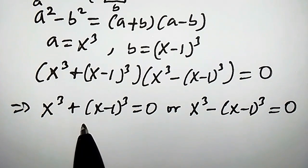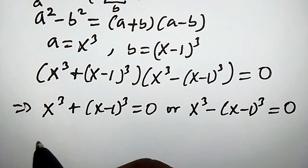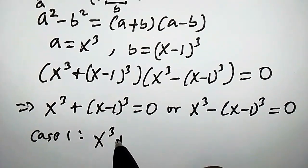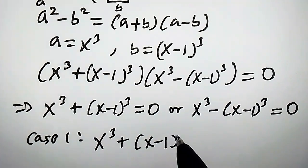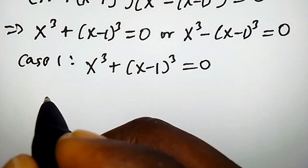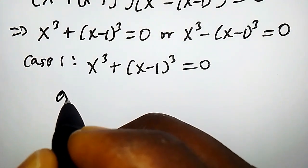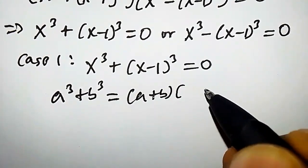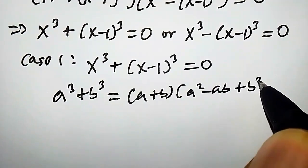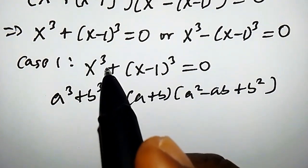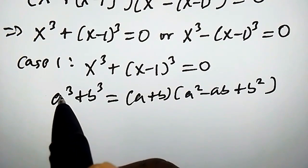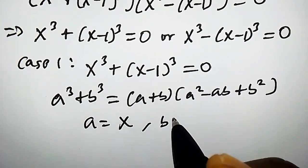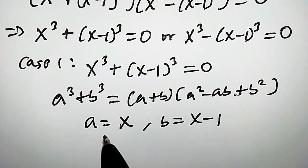So we will now consider each case. Case 1: x cubed plus x minus 1 cubed equals 0. Recall that a cubed plus b cubed equals a plus b times a squared minus ab plus b squared. Comparing our left hand side, our a is x and our b is x minus 1.